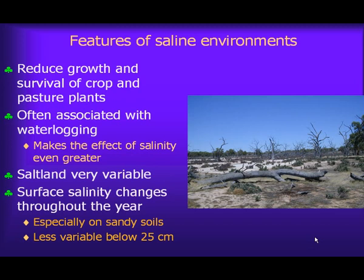So what are some of the features of a saline environment? The most obvious thing is they reduce the growth and survival of crop and pasture plants. These environments are often associated with winter waterlogging due to rising water tables close to the surface, and this waterlogging makes the effect of salinity even greater. Salt land is also spatially very variable — we've measured tenfold differences in salinity levels within just a metre. Surface salinity levels change throughout the year, particularly on sandy and sandy loam soils, although they're less variable below about 25 centimetres depth.